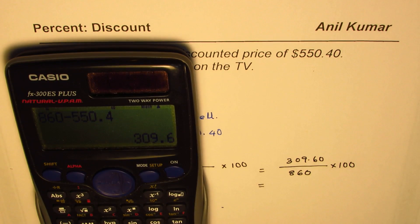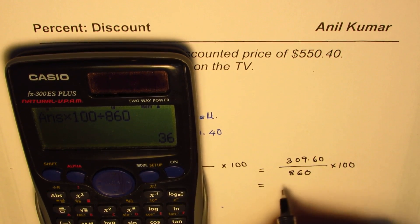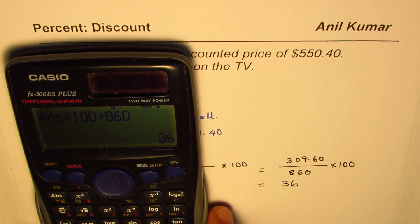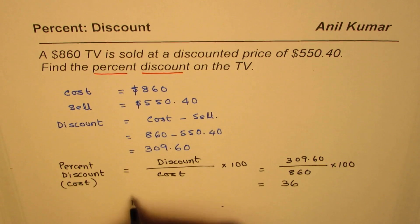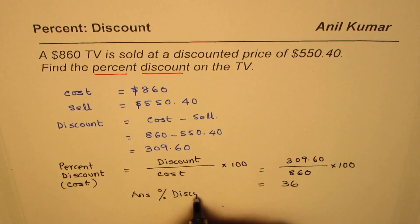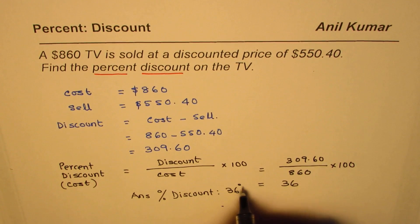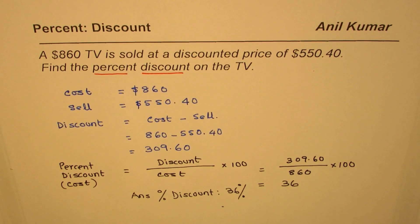We already have 309.60; we multiply this by 100 and divide by 860 to get the answer, which is 36. So the percent discount is 36%.